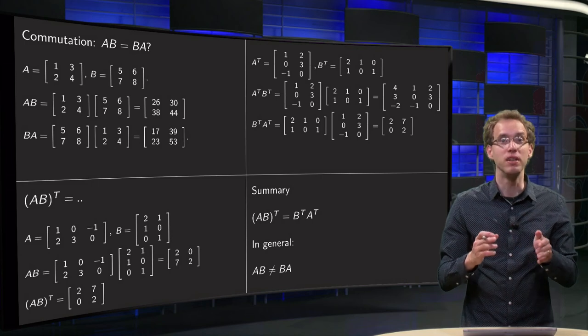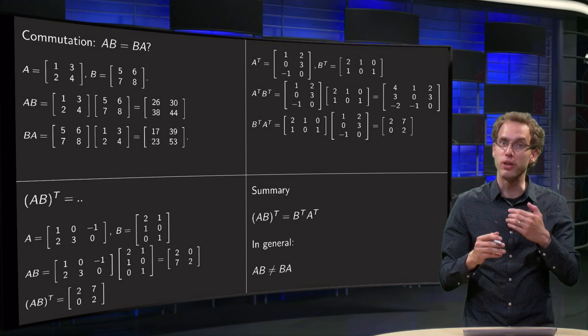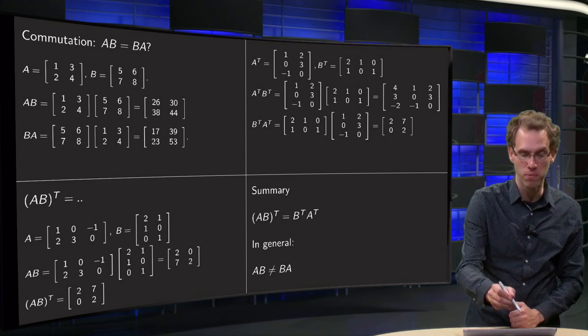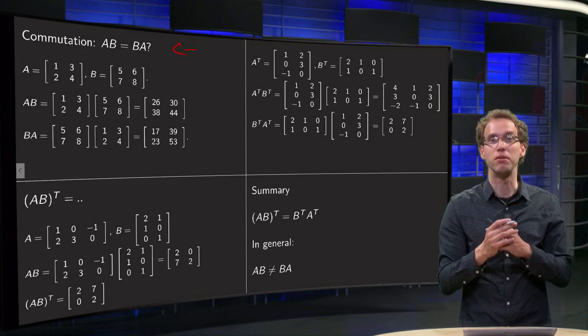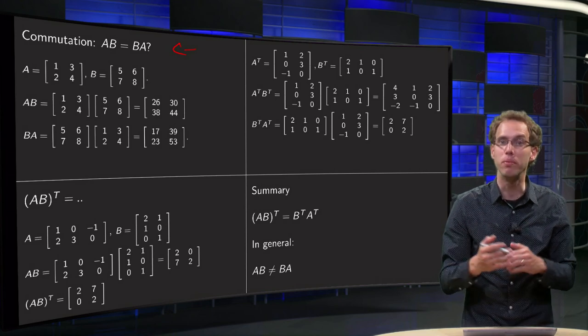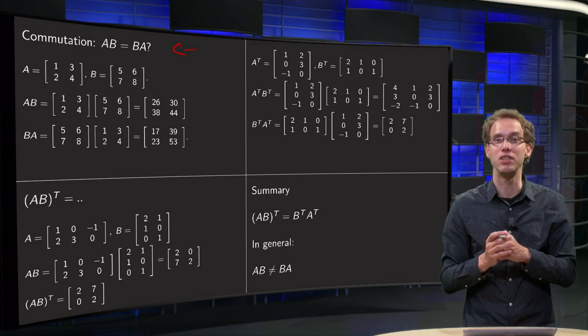However, A times B is not equal to B times A in general. And we have already shown that, because showing that something is not true is always easier. You only need to show one example, and we have already seen an example over here. So A times B may happen to be the same as B times A. You'll be able to think of some examples of that. However, in general, this is not true.